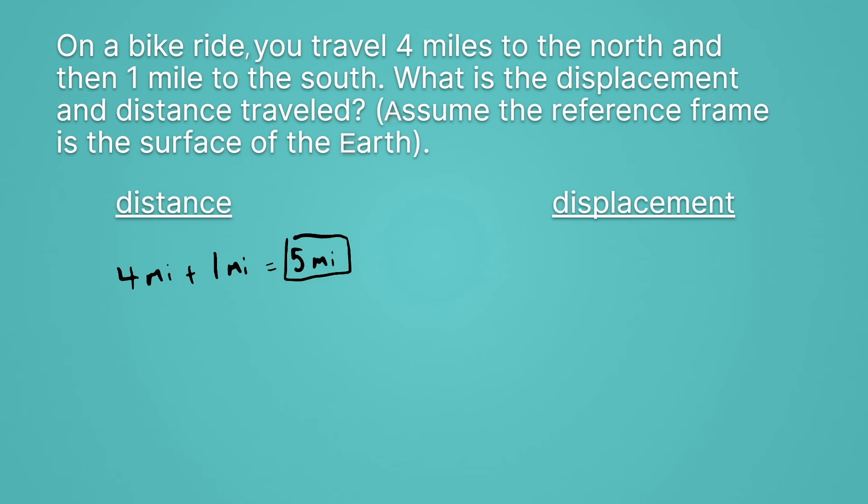Again, for our displacement, we have to think about direction. And we know that on the bike ride, we set out going north. And we go north, which is represented as up for four miles. Then we turn back around, and we go south, which is the opposite direction. And we go just for one mile.